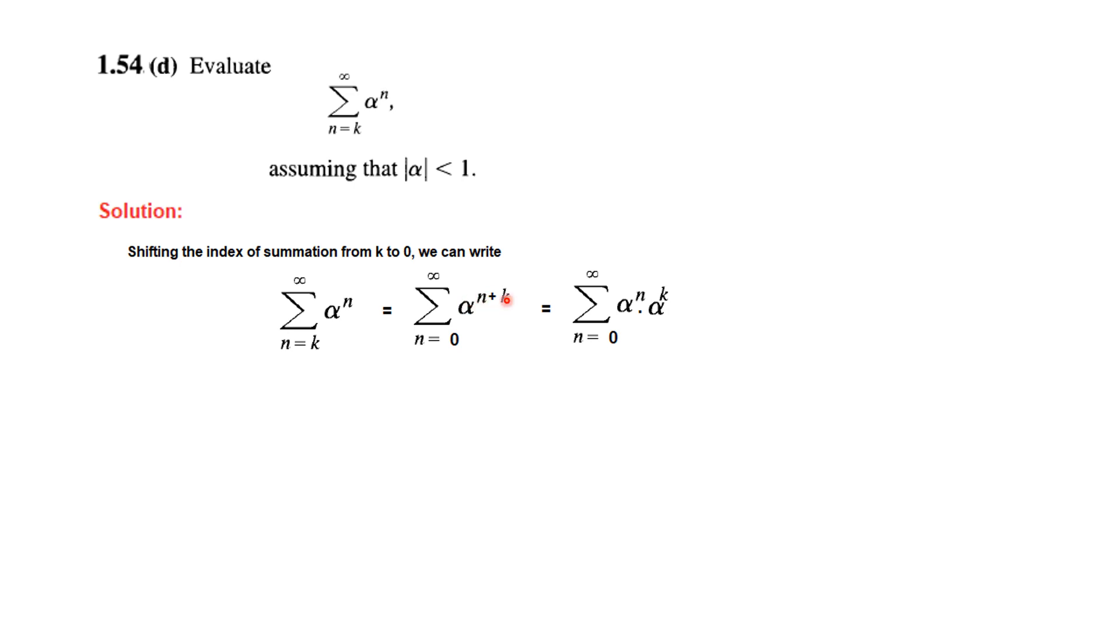And this we can separate by like this: alpha^n multiply by alpha^k will give alpha^(n+k). We take alpha^k outside because the dependent variable is n, so we keep it here. And now we will apply this formula that we have just learned for this portion.